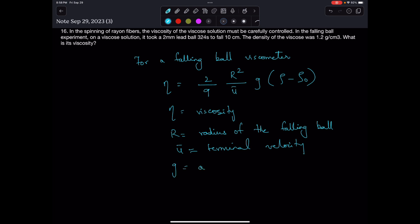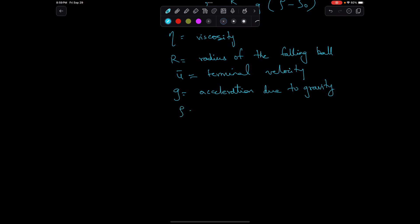g is the acceleration due to gravity, rho is the density of the ball, and rho zero is the density of the viscose polymer.